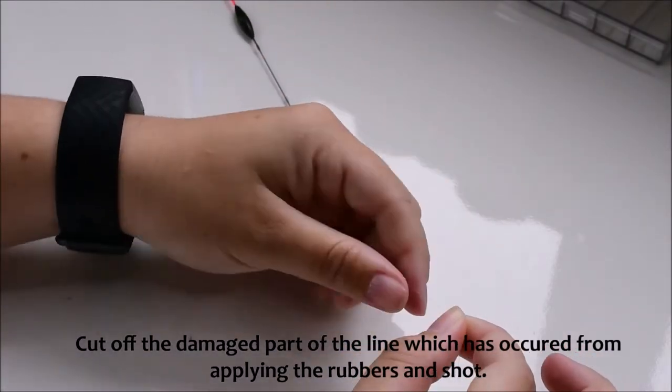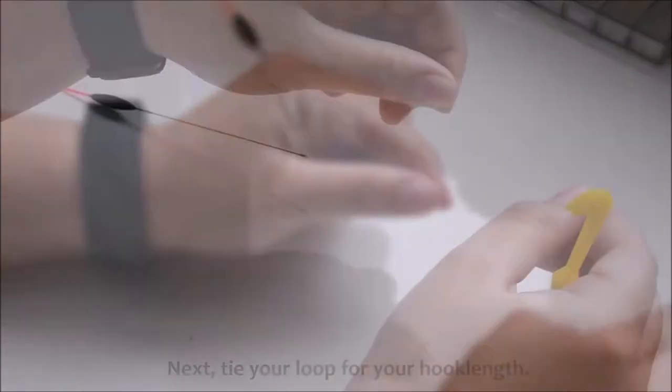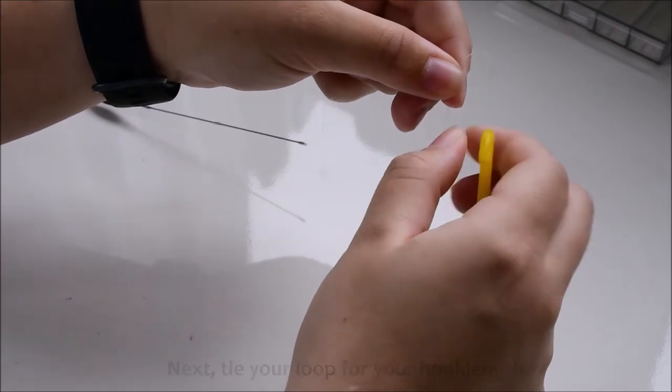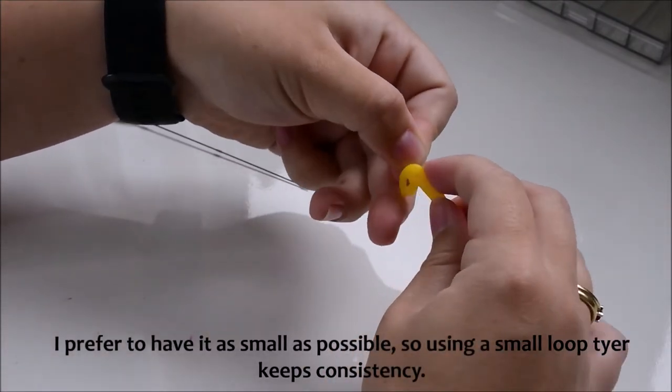Cut off the damaged part of the line which has occurred from applying the rubbers and shot. Next, tie your loop for your hook length. I prefer to have it as small as possible, so using a small loop tyer keeps consistency.